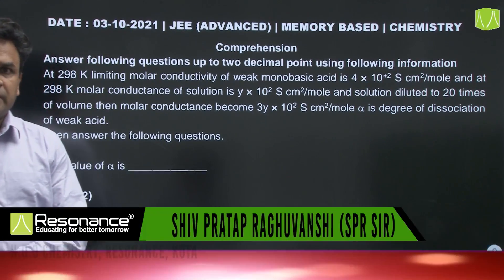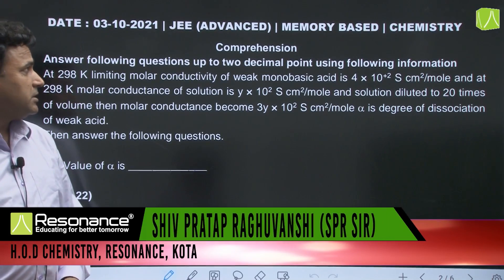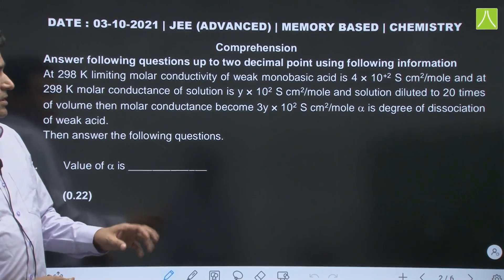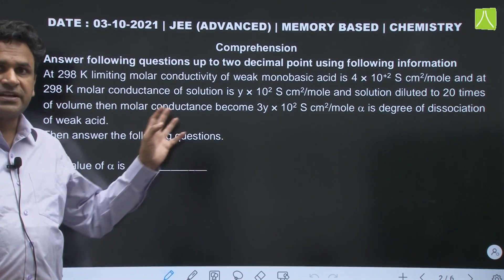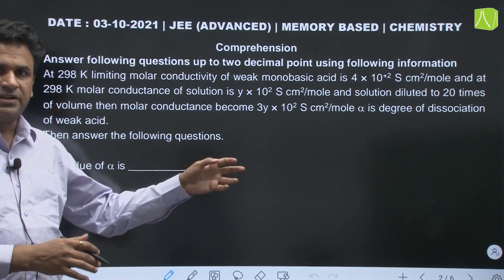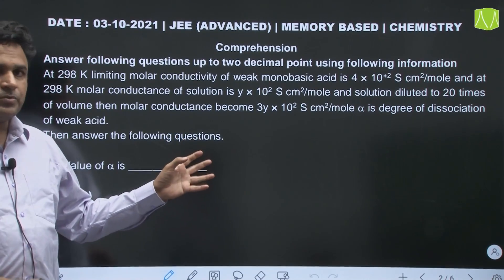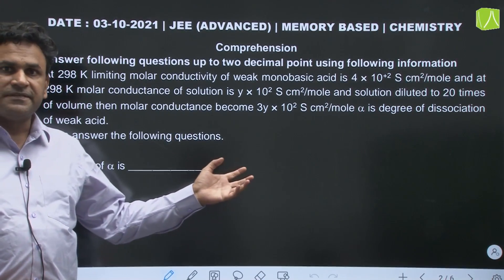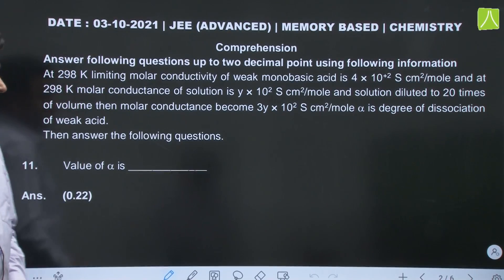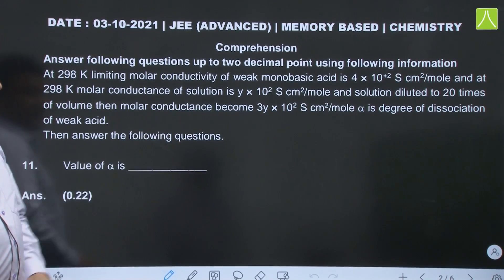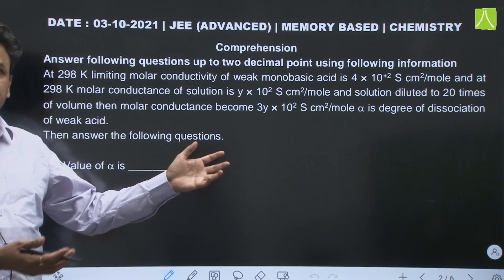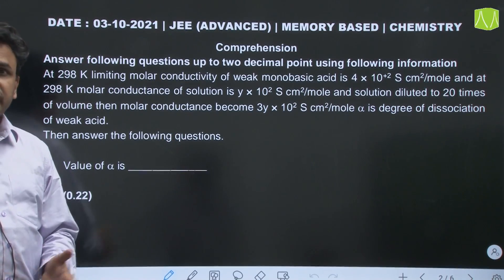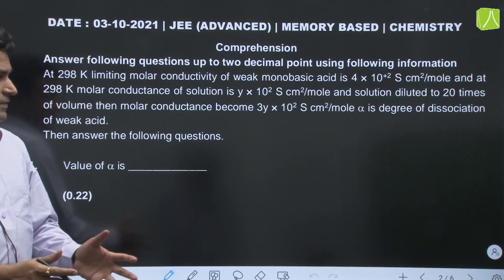Hello students. In this session I am bringing you three more questions from JEE Advanced 2021 paper. These questions are memory based, so we are not very sure of the exact language and the data can also be slightly different, but the concept is going to be similar. These three questions are from the physical chemistry side, and two questions are based on this paragraph from molar conductance and electrolytic conductance — it is a part of electrochemistry.